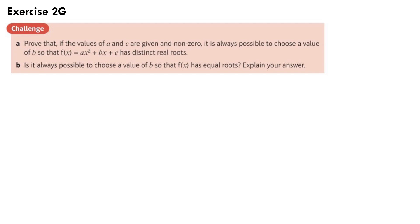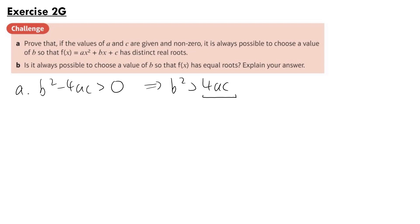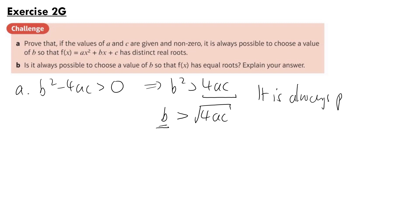For the question from exercise 2g, part A says: prove that if the values of a and c are given and non-zero, it is always possible to choose a value of b so that f(x) = ax² + bx + c has distinct real roots. For distinct real roots, the discriminant must be greater than 0, so b² > 4ac. If 4ac is positive, we can always choose b large enough so that b² > 4ac. If 4ac is negative, then b can be any positive number, as any positive number squared will be greater than a negative number. Therefore it is always possible to find such a b.